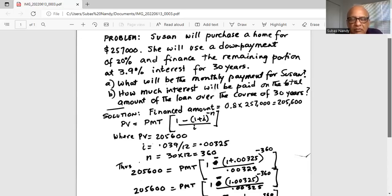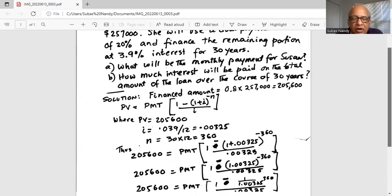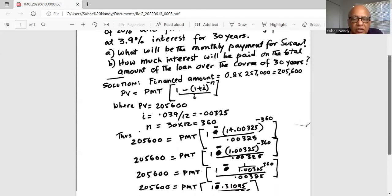So when we substitute the values, we get $205,600 equals payment times 1 minus 1 plus 0.00325 in parenthesis, exponent is minus 360, divided by 0.00325.